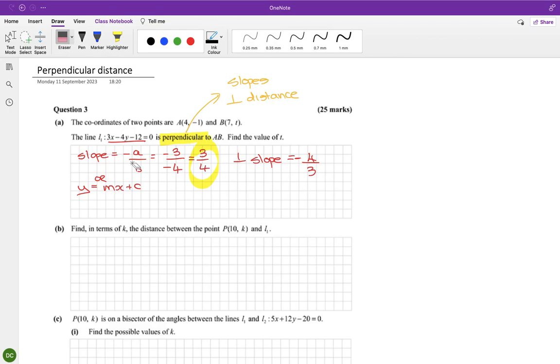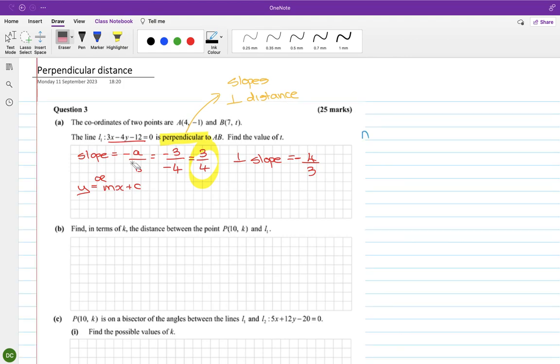We have (4,-1) and (7,t), and that's x1, y1, x2, y2. To get slope we do y2 minus y1 over x2 minus x1. So t minus minus 1, which is plus 1, and 7 minus 4. So the slope is (t+1)/3.